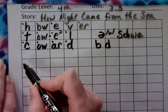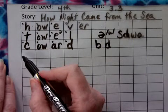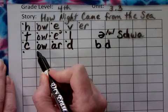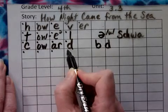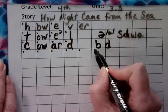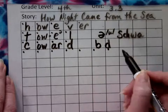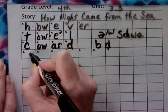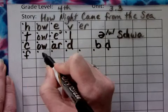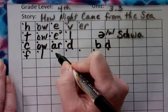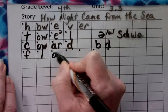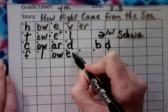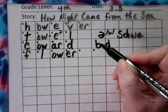Coward. The next word is 'flowerpot.' Sound it out: F-L-OW-ER-P-O-T. F is the first sound, then L, then OW, then ER — R-controlled E-R — then flower. Pot: P.